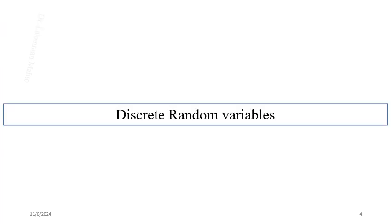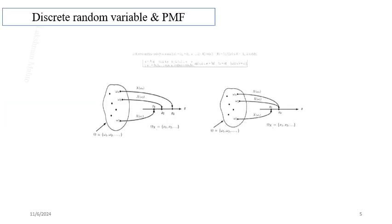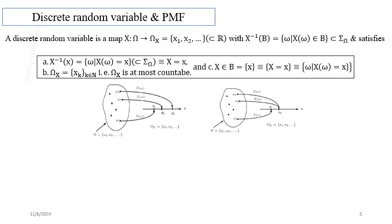In all these examples we are converting or transforming random outcomes to random numbers. Those numbers are called random numbers because they occur with some probability — they are not certain. When we have a discrete random variable, we classify random variables based on the range. If omega X is a discrete set, meaning we can write the random numbers as a single sequence x_k where k belongs to the natural numbers, then the corresponding random variable is called a discrete random variable.